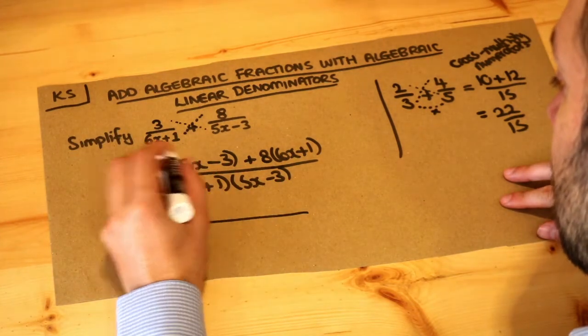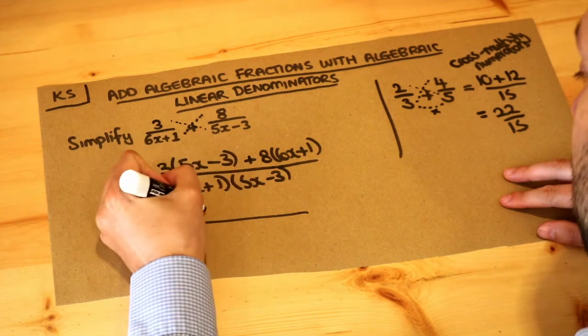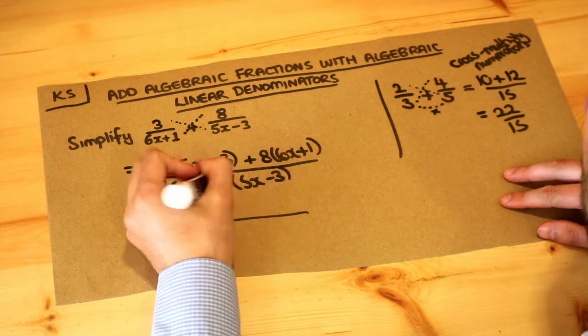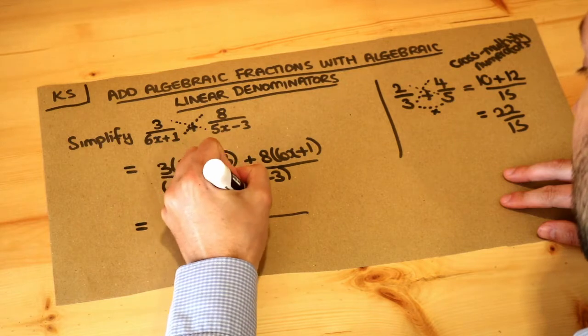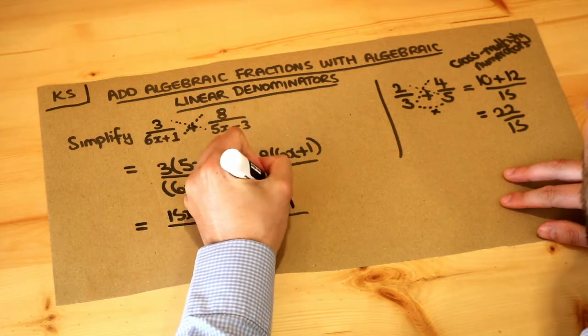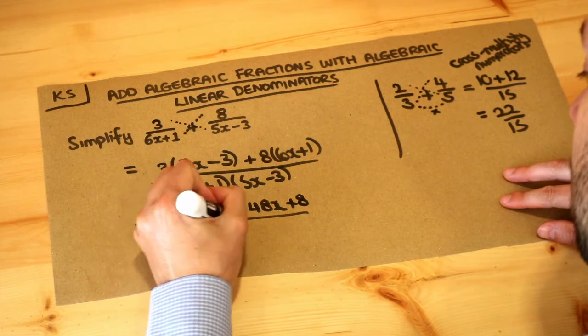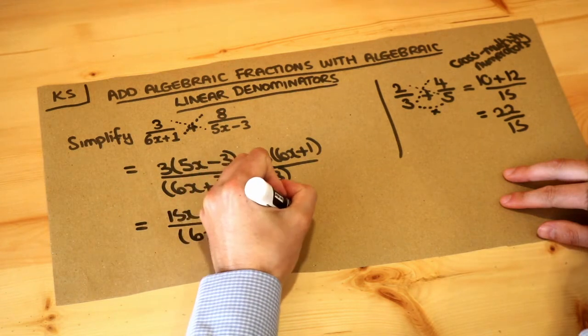So if we do that: 3 times 5x is 15x, 3 times -3 is -9, 8 times 6x is +48x, and 8 times 1 is 8. And the bottom we're just going to leave as it is.